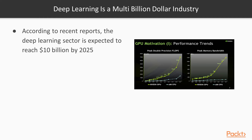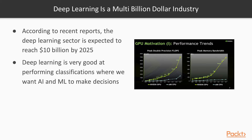Deep learning is a multi-billion dollar industry and by 2025 it's expected to reach 10 billion US dollars. This is based on the fact that deep learning can solve a lot of problems — self-driving cars, Netflix recommendations, spam filtering. Deep learning is very good at doing these classifications and tasks where we want AI or machine learning to make decisions, and it's going to have a very big impact in that area.